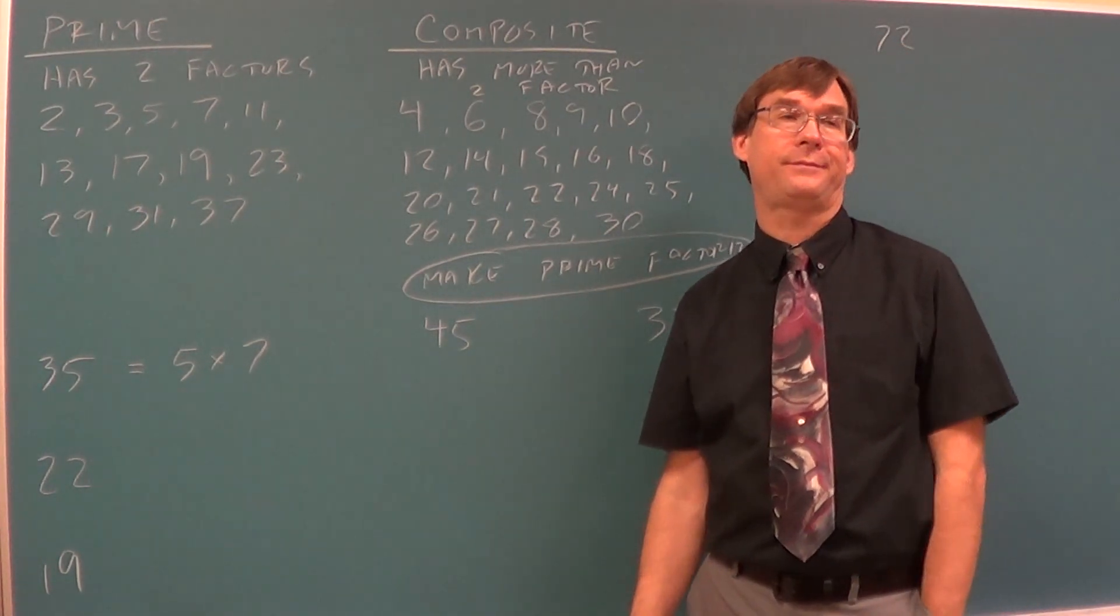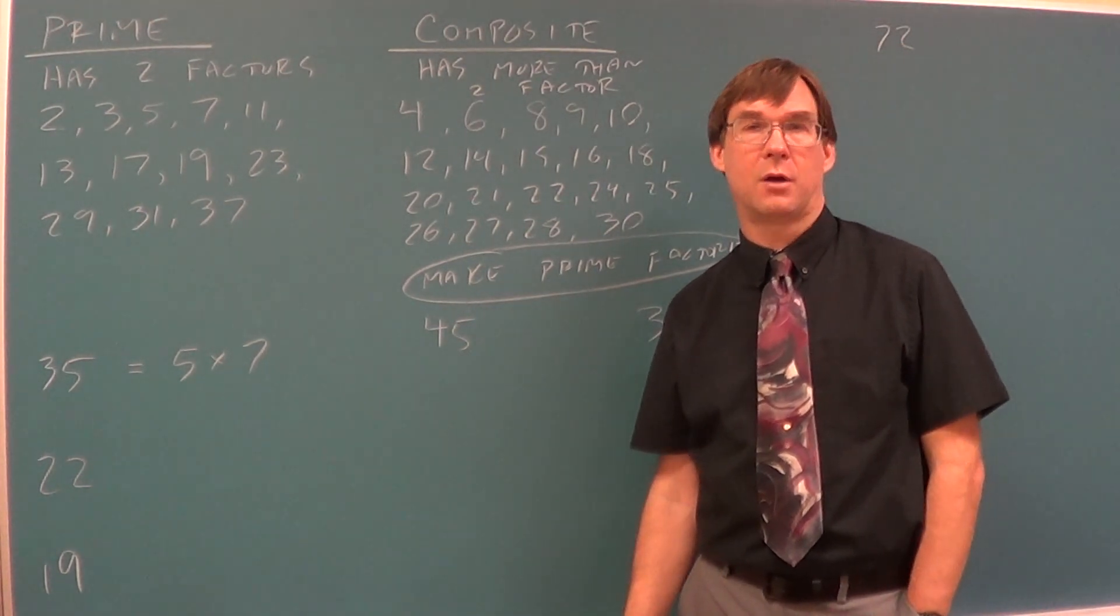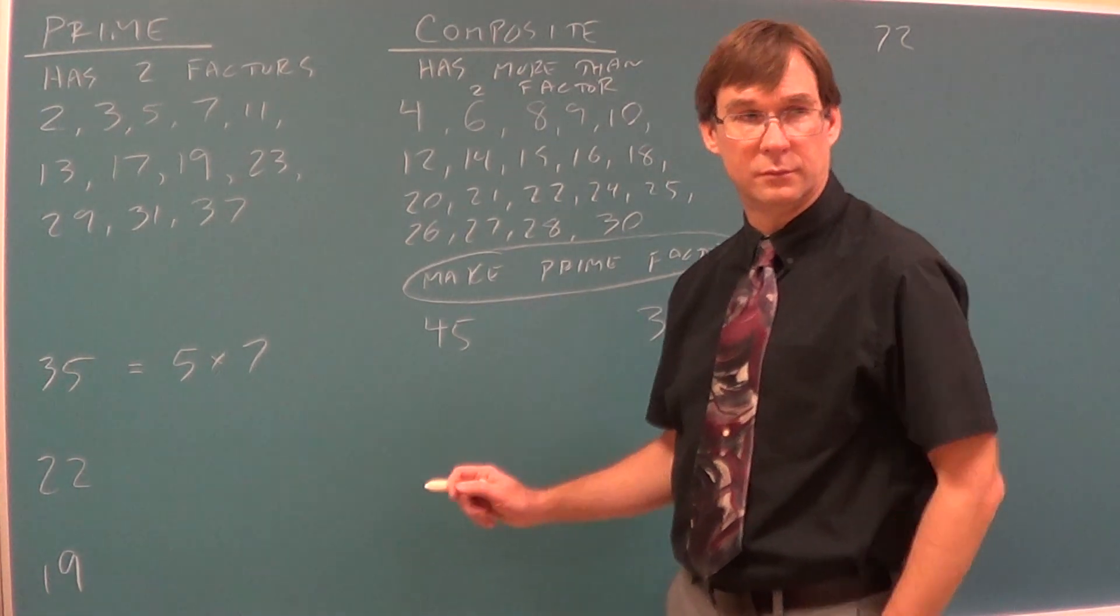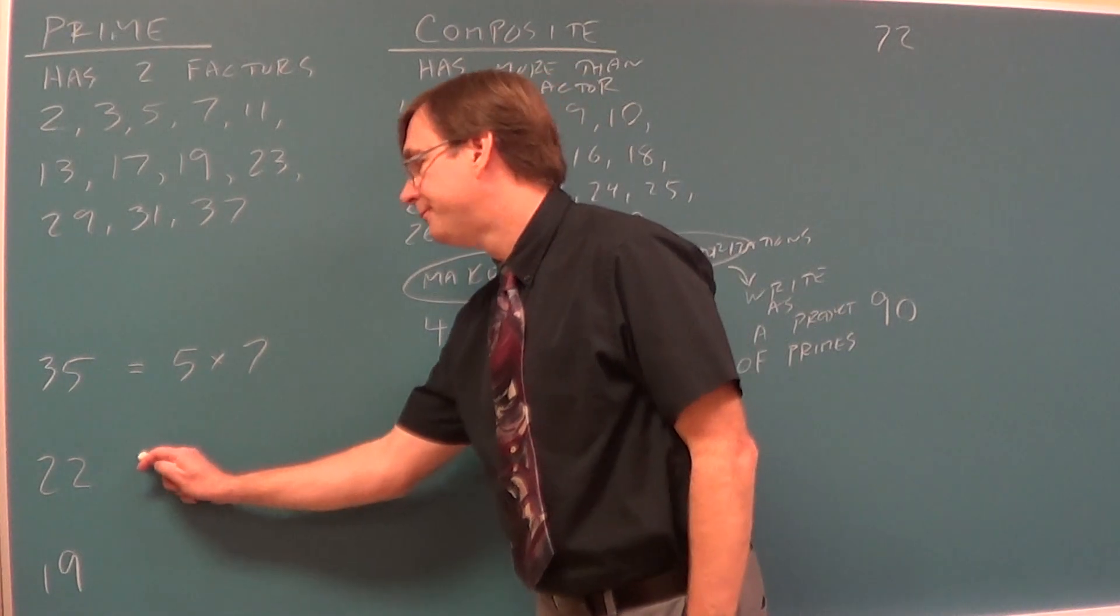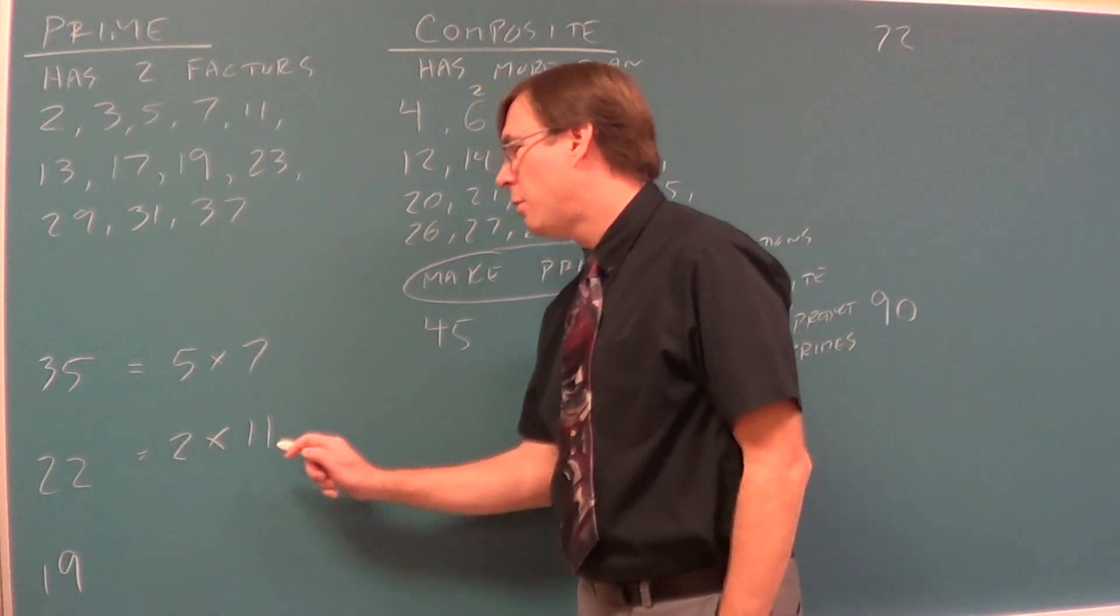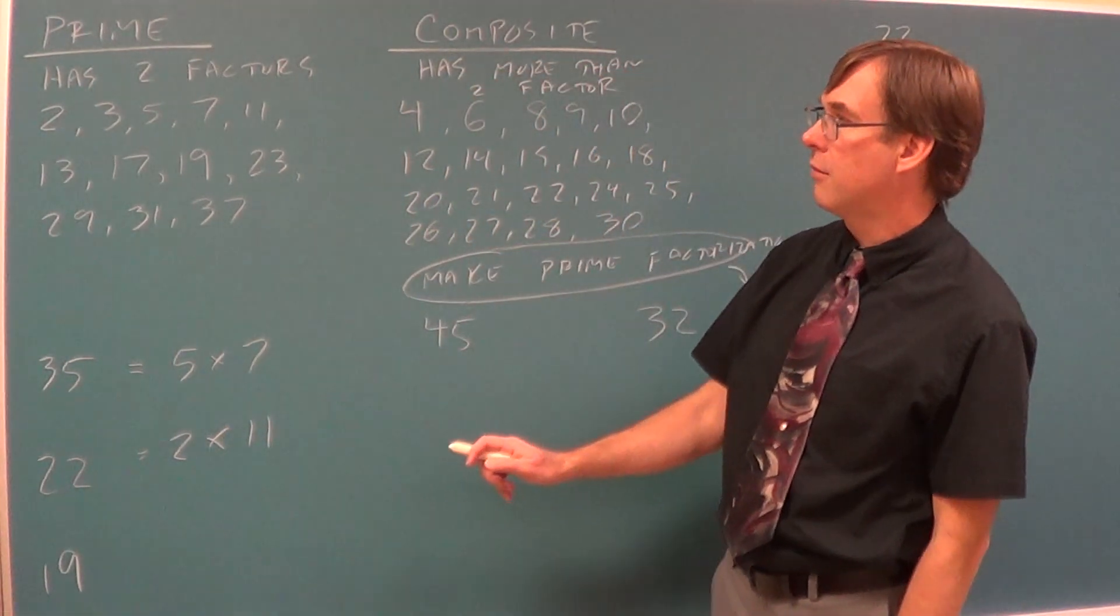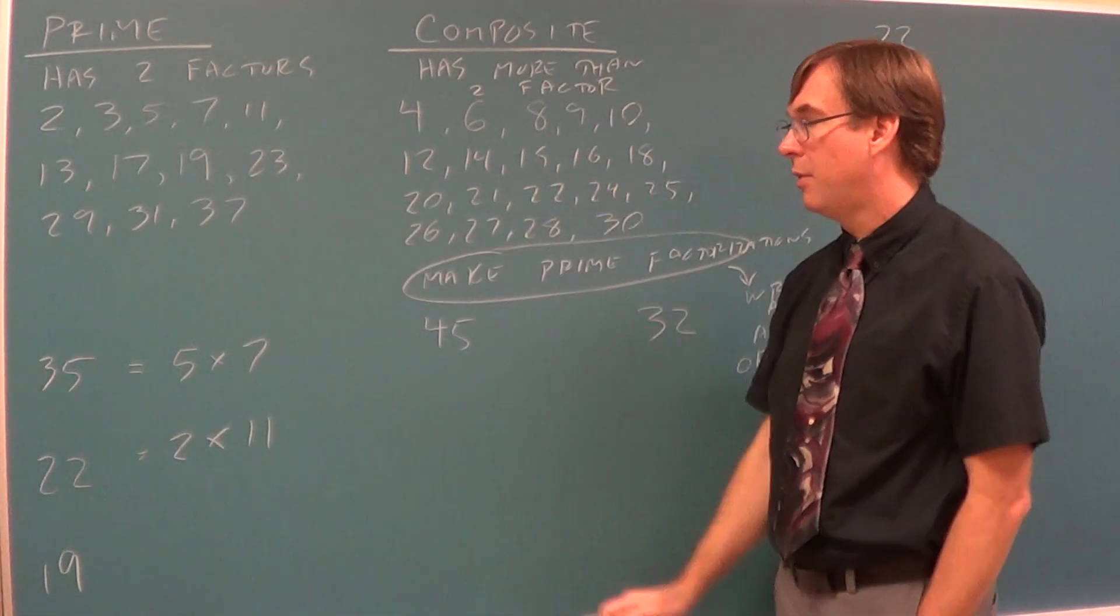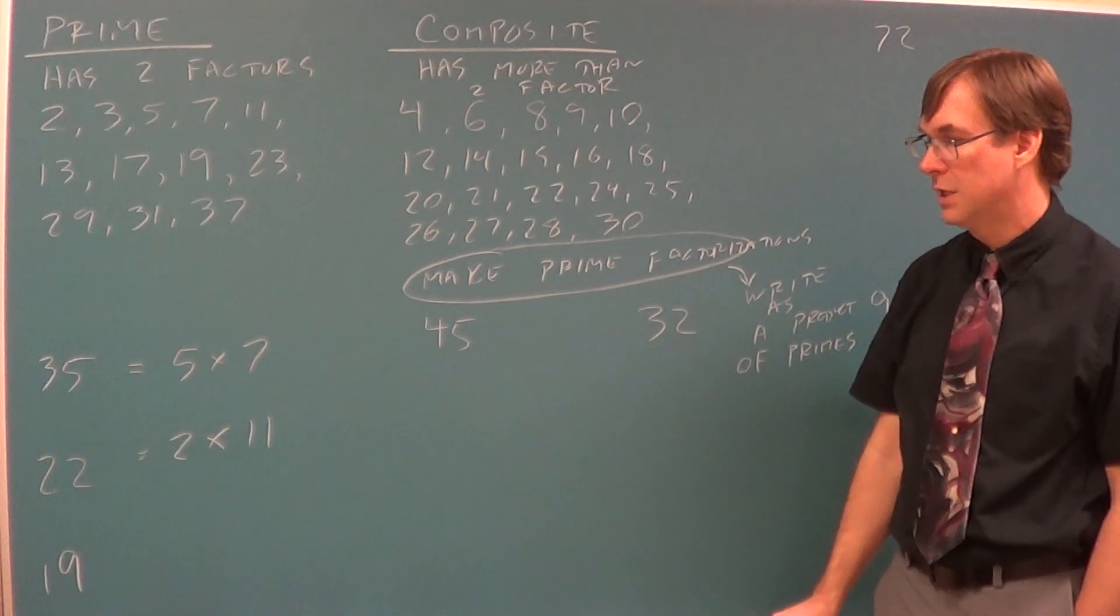How can we do twenty-two? Eleven times two. Yep. So I'm going to always go least to greatest. That doesn't make it right or wrong, but I'm going to go two times eleven. Two is on the prime list. Eleven is on the prime list, so that is a prime factorization.